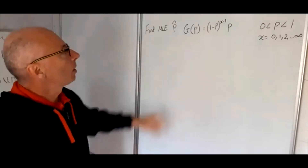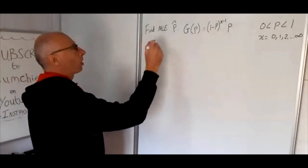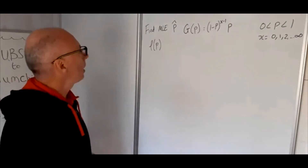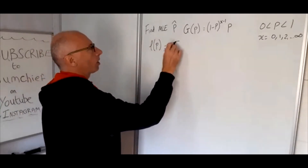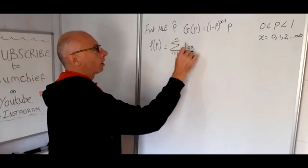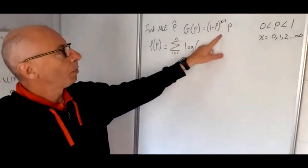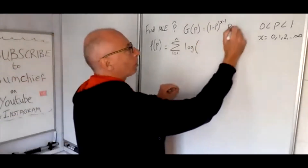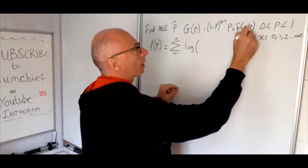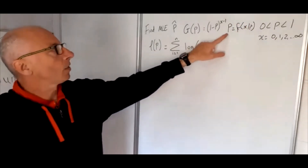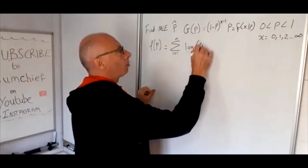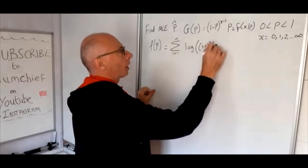For the maximum likelihood estimate, we first find the log-likelihood. The log-likelihood with parameter P equals the sum from i equals 1 to n of the log of the PDF, where the PDF is F of X given P. So we substitute the geometric PDF in: 1 minus P to the X minus 1, times P.